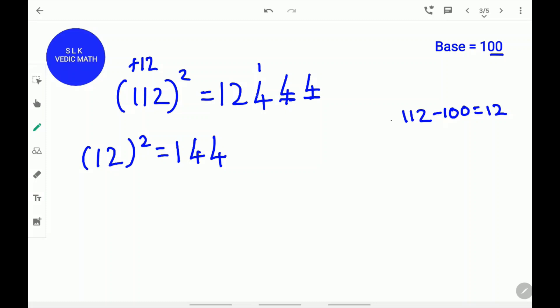Next, add the 4 plus 1. 4 plus 1 is 5, and then 44. So, the answer for 112 square is 12544.